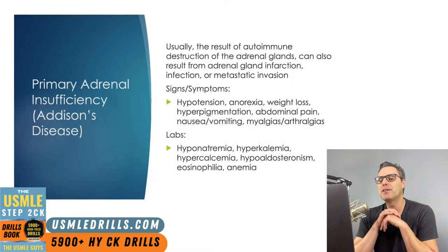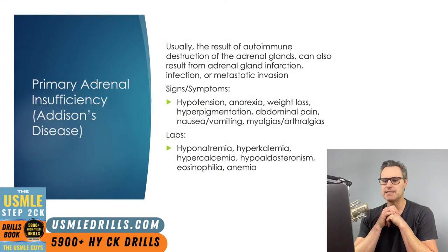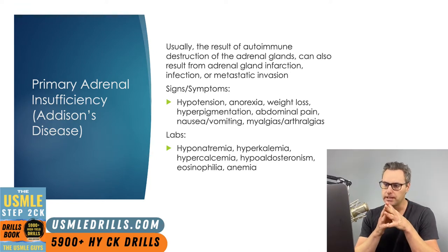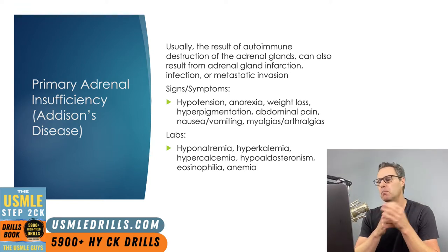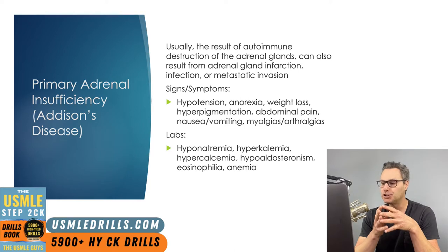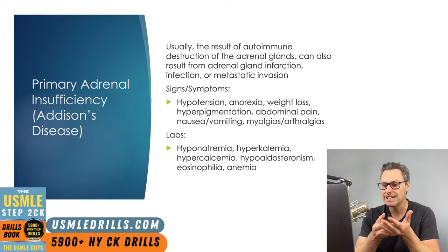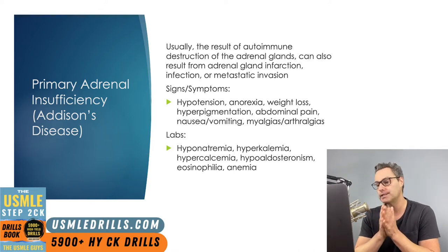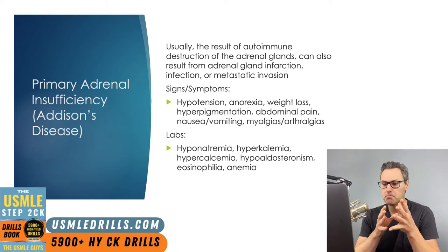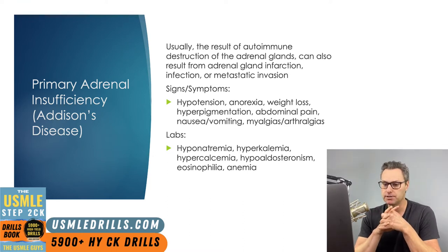Let's get started with primary adrenal insufficiency, otherwise known as Addison's disease. This disease is most commonly the result of autoimmune destruction of the adrenal glands. Hemorrhagic or embolic infarction, infections — particularly TB or meningococcus — are known to cause damage to the adrenals. Invasion by metastatic diseases is also a possible cause.